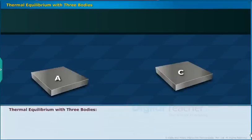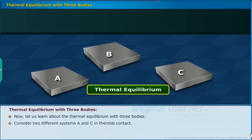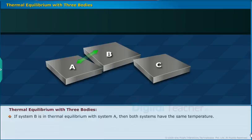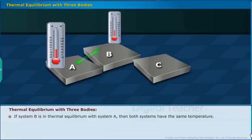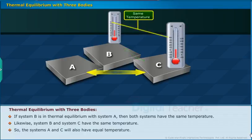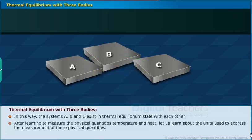Thermal equilibrium with three bodies: Consider two different systems A and C in thermal contact. These systems are in thermal equilibrium individually with another system B. If system B is in thermal equilibrium with system A, then both systems have the same temperature. Likewise, system B and system C have the same temperature. So systems A and C will also have equal temperature. In this way, systems A, B and C exist in thermal equilibrium with each other. Let us learn about the units used to express the measurement of temperature and heat.